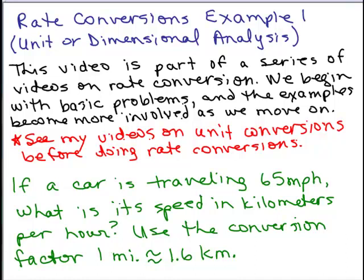If a car is traveling 65 miles per hour, what is its speed in kilometers per hour? Use the conversion factor one mile is approximately 1.6 kilometers. So let's see.